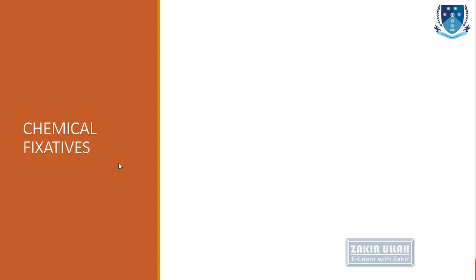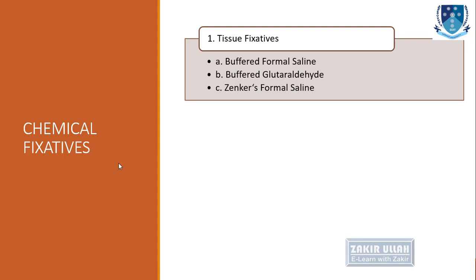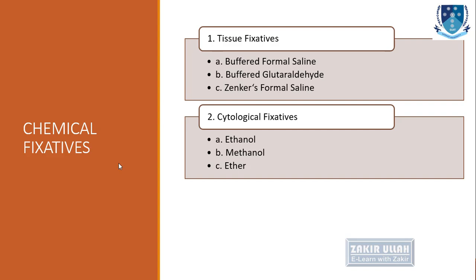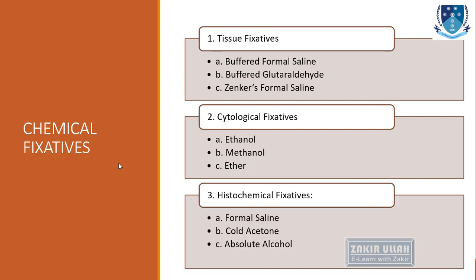Now turning to the different types of chemical fixatives used in cytopathological and histopathological laboratories. On a chemical basis: for tissue fixation, we use buffered formal saline, buffered glutaraldehyde, or Zenker formal saline solutions. For cytological smear fixation and cytological studies, we use ethanol, methanol, or ether. For histochemical fixatives, we use formal saline, cold acetone, or absolute alcohol.